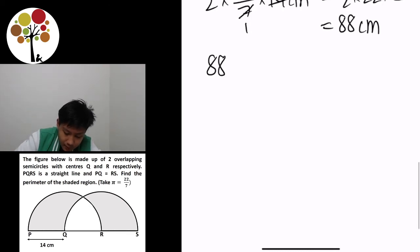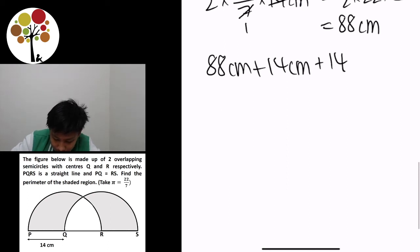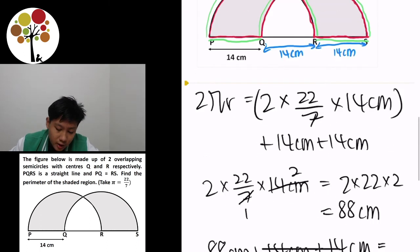So 88 cm plus 14 cm plus 14 cm is equal to 116 cm. And that is the perimeter of the shaded region.